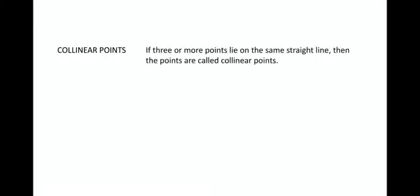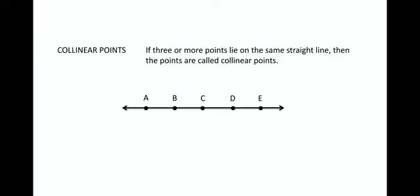Next we have collinear points. If there are three or more points which lie on the same straight line, then the points are called collinear points. Suppose there are a set of points such that a straight line can pass through them — then those points A, B, C, D, and E are collinear points. They all need to lie on the same straight line to be collinear points.